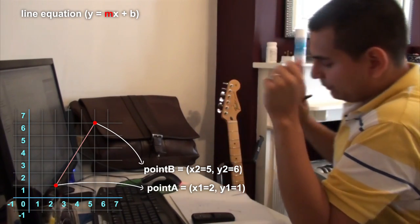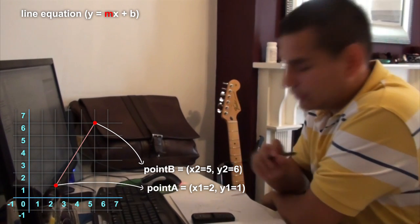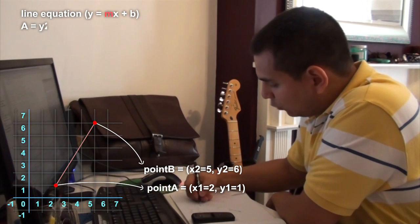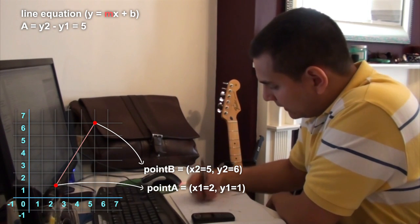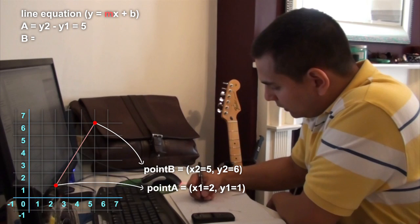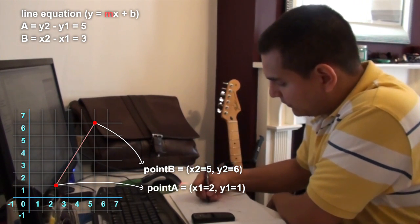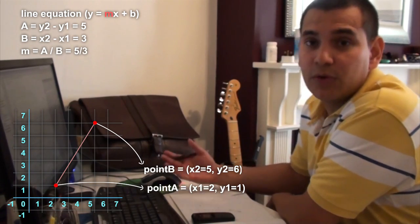In our case, to define that slope is so simple. What we have to do is just, let's say, a variable A equal Y2 minus Y1, and let's say B equal X2 minus X1, and then the slope, the direction of it is just A divide B. That's all.